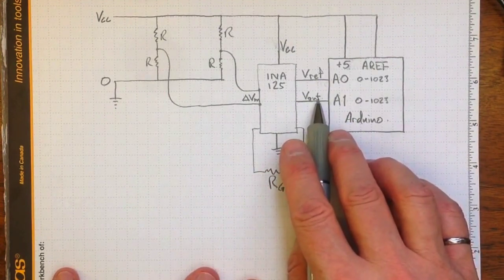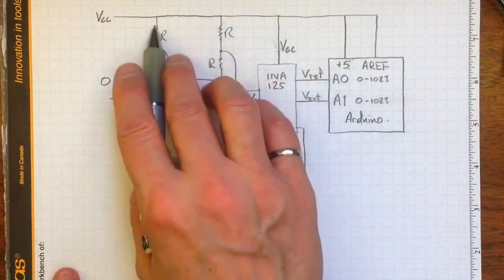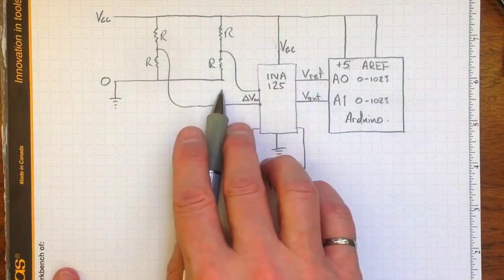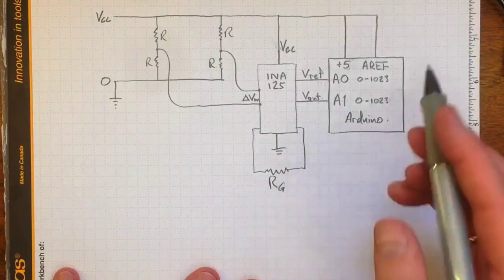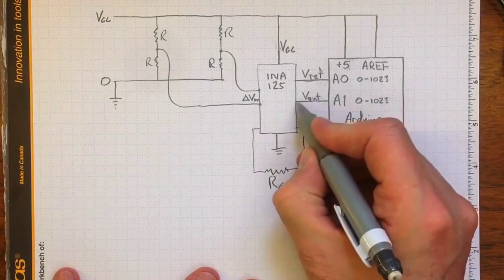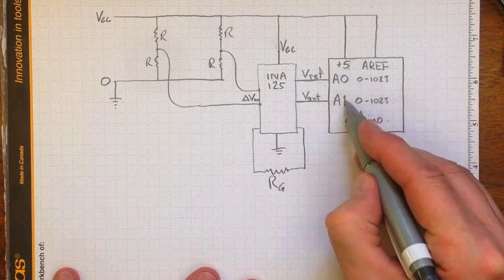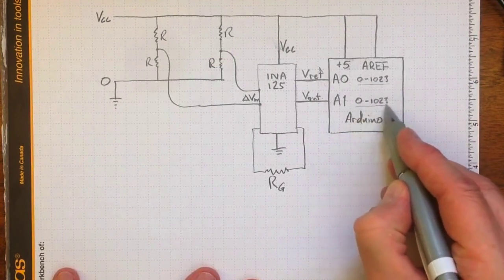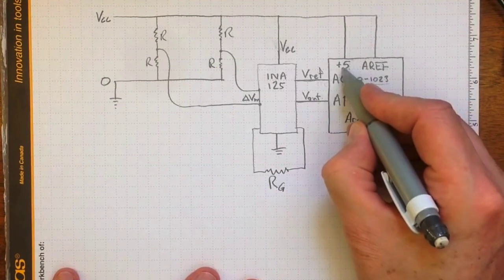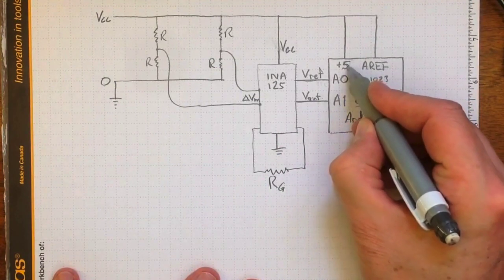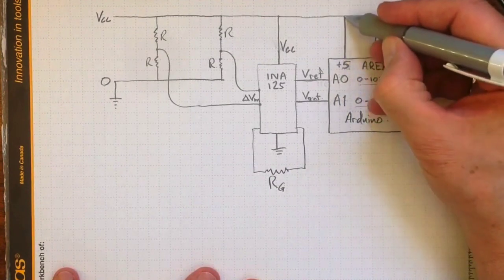This output voltage is also going to depend on the magnitude of the supply voltage, this Vcc, that we're putting across here because it's been determined by the input voltage. Now when we go and measure these output voltages from the amplifier on our Arduino, if we connect them to the analog ports to convert them into numbers from 0 to 1023, and if we use the same reference voltage for the conversion, then that conversion will also depend on what the supply voltage was.